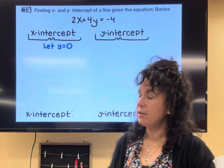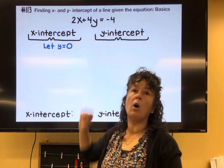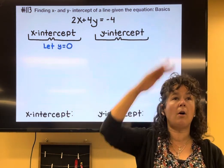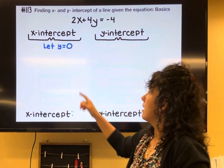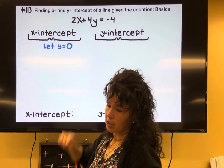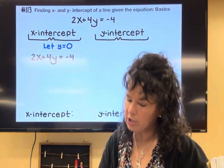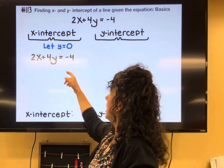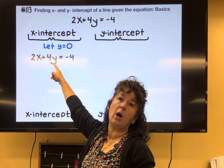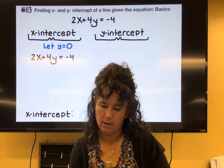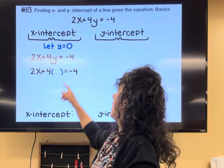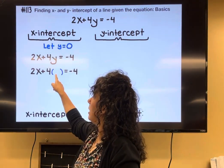So keeping that in mind, to find your x-intercept, you're going to replace the y with zero, because we're not going to come off the x-axis. And then, good notation, I'm going to take the original equation here, and then I'm going to put a set of parentheses where the y used to be, and then I'm going to replace that y with zero.